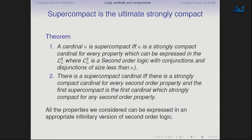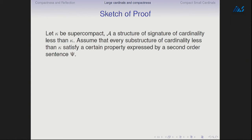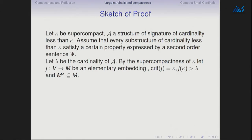You can have compactness for properties beyond second order — third order, fourth order, and so on. The properties we consider can be expressed in an infinite version of second-order logic, so supercompactness is good enough for having reflection for all of them. Let me give a very brief proof sketch — for most of you it will be well known — but I want to give it because it will be a prototype for other things. Suppose κ is supercompact and A is a structure of cardinality λ with language of cardinality less than κ, and every substructure of cardinality less than κ satisfies a second-order sentence Ψ.